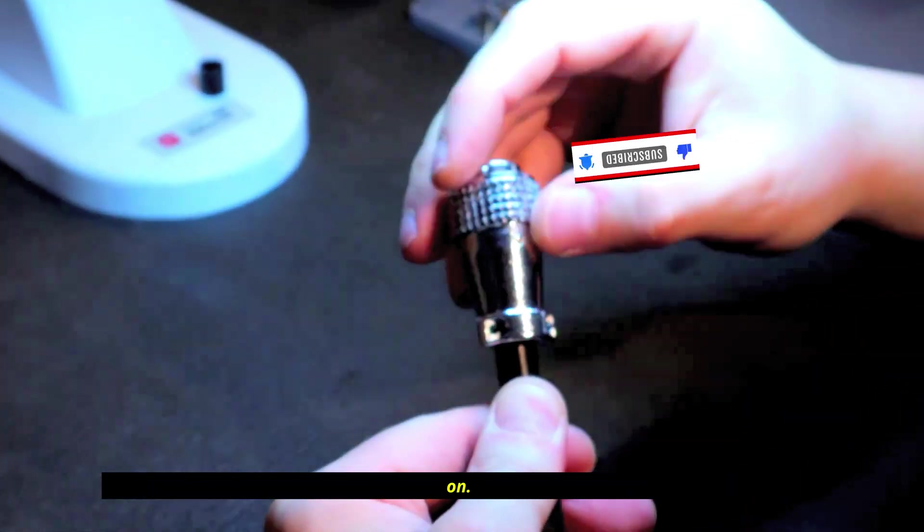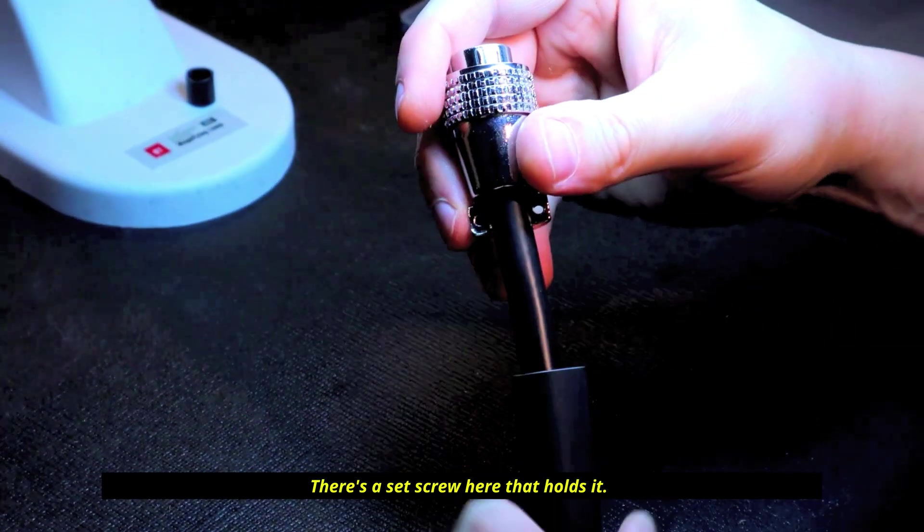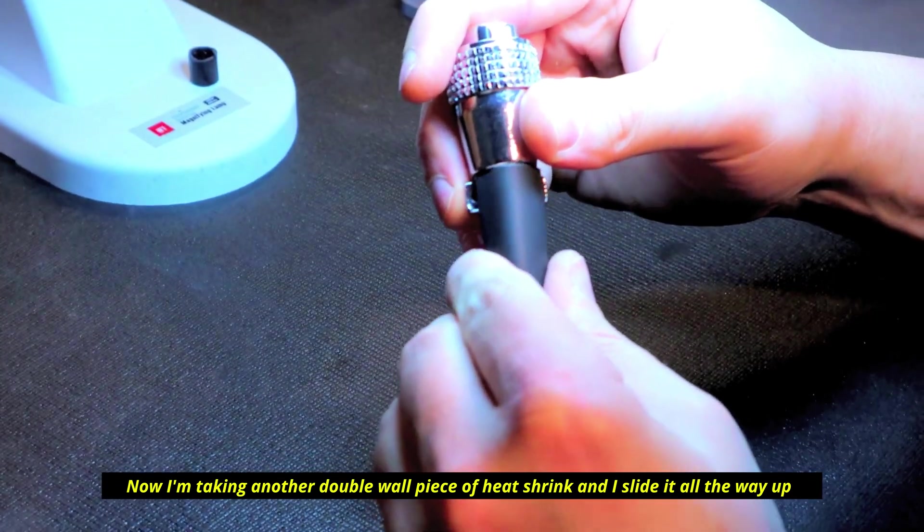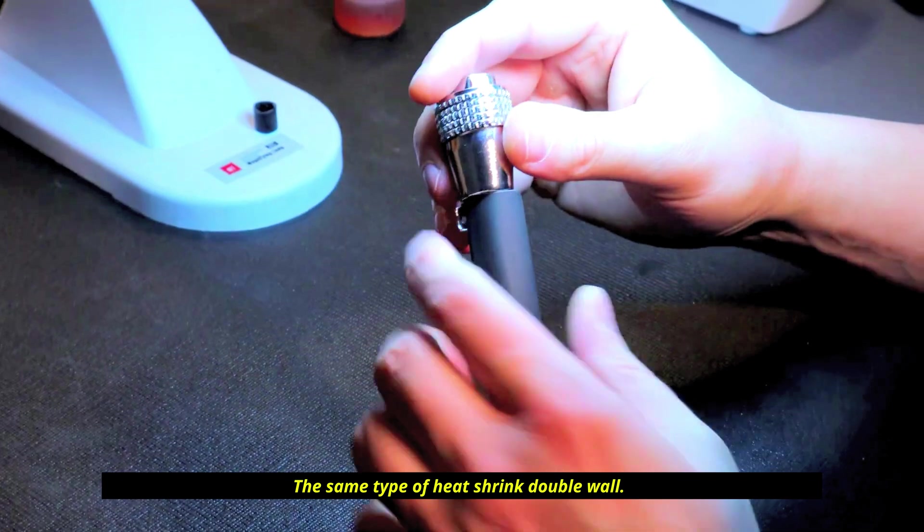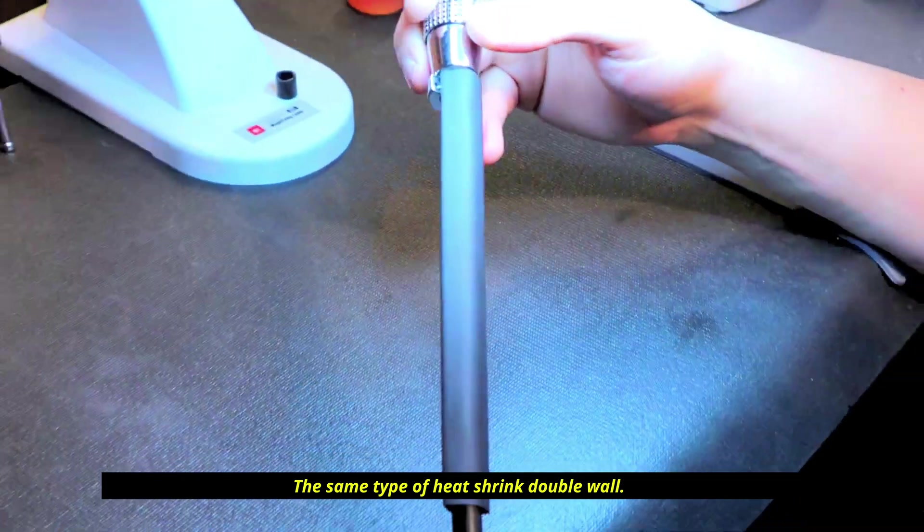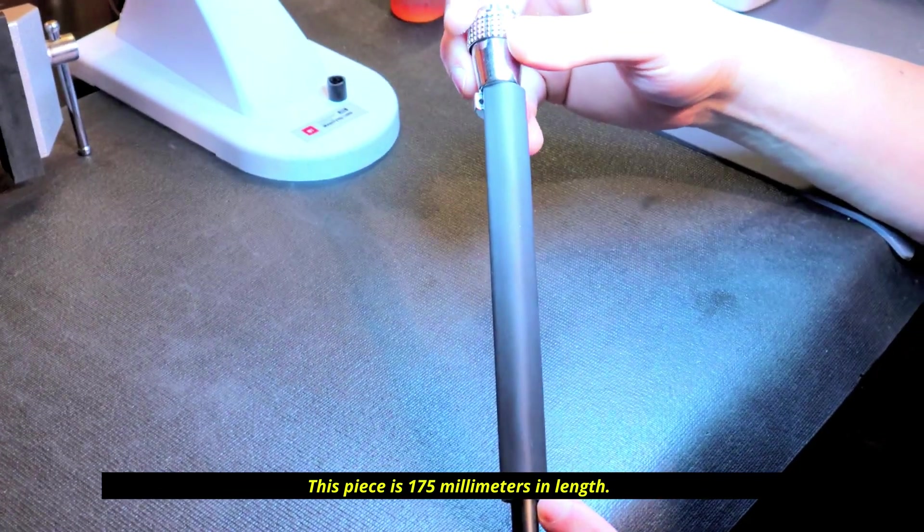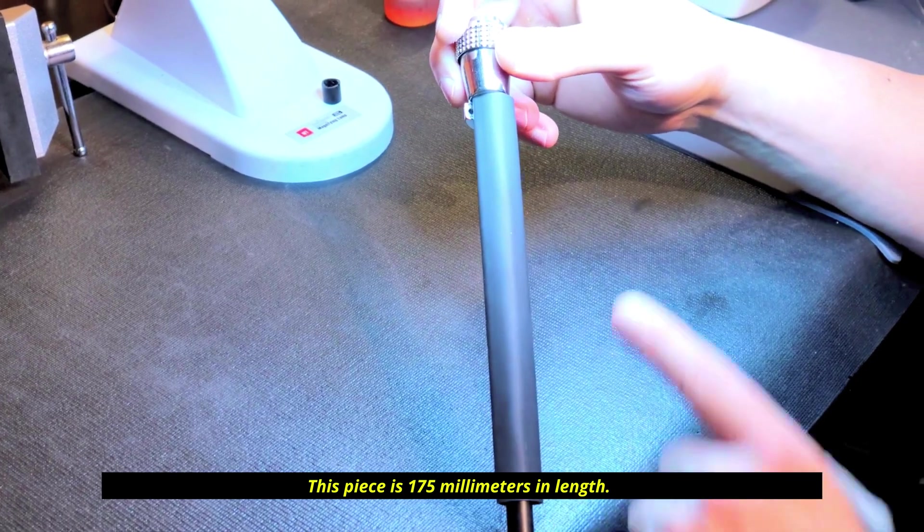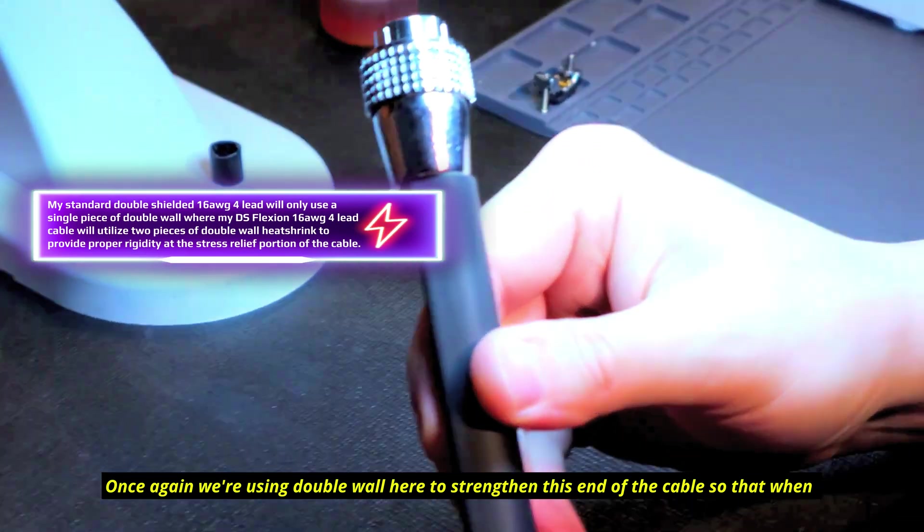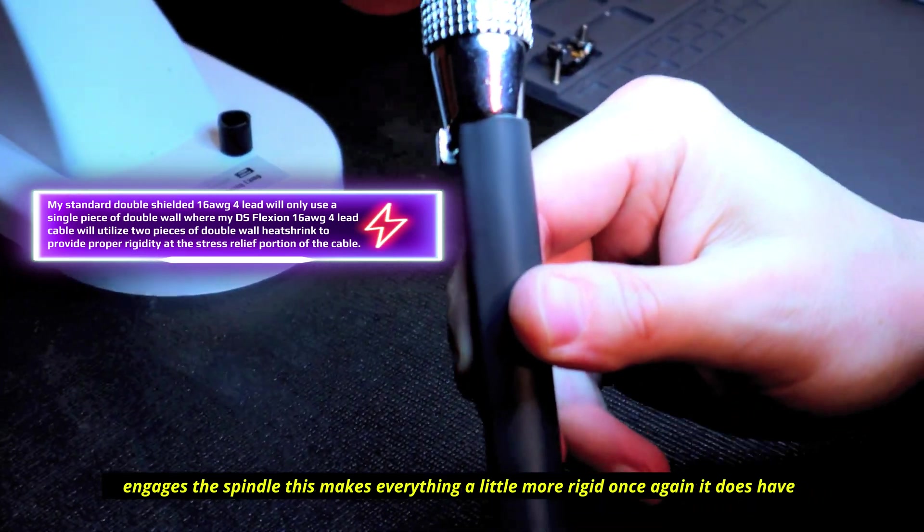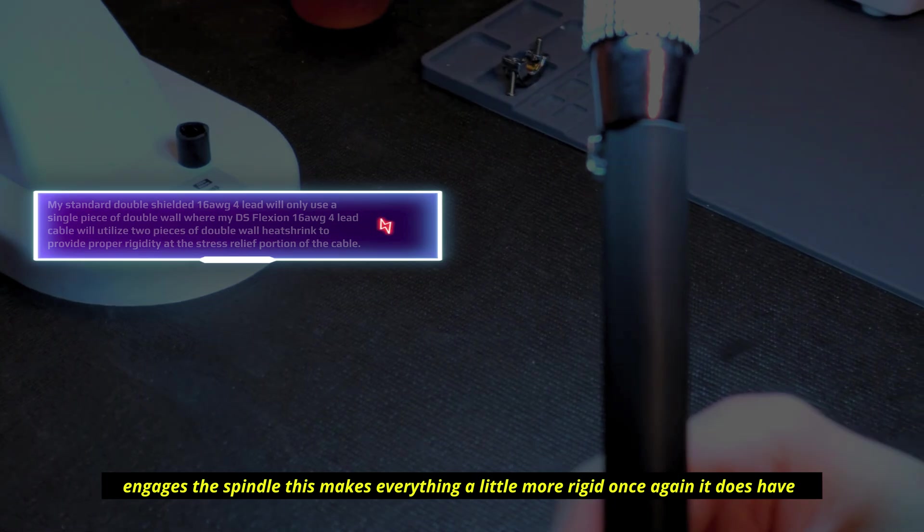There's a set screw here that holds it. Now I'm taking another double wall piece of heat shrink and I slide it all the way up inside, the same type of heat shrink, double wall. This piece is 175 millimeters in length. Once again, we're using double wall here to strengthen this end of the cable so that when it engages the spindle, this makes everything a little more rigid.